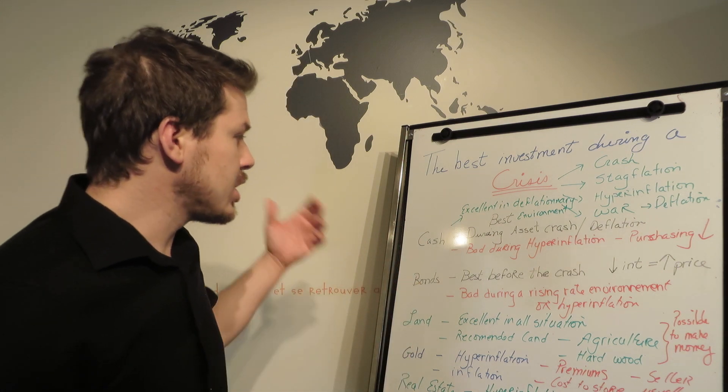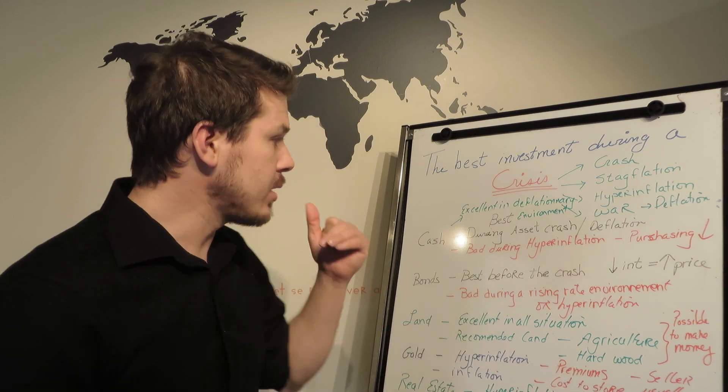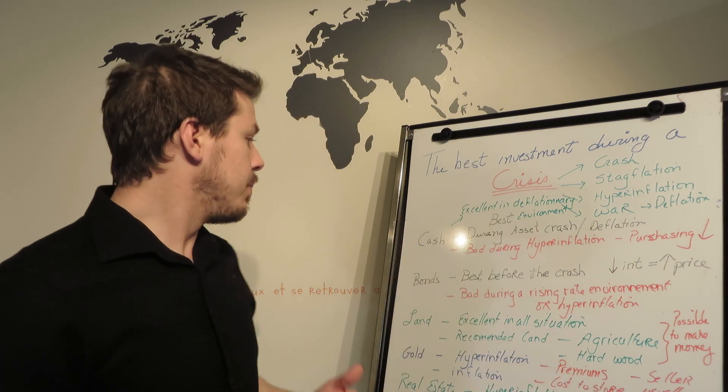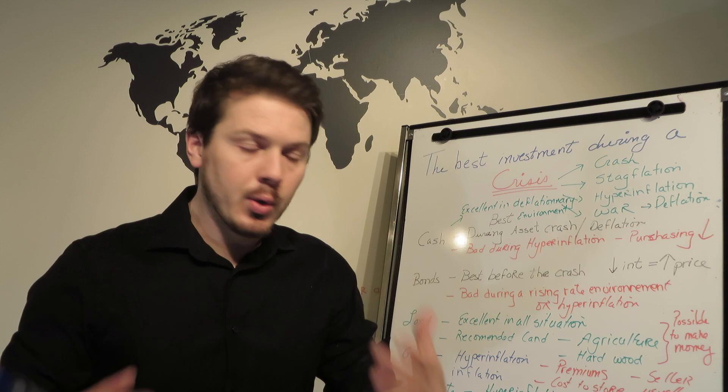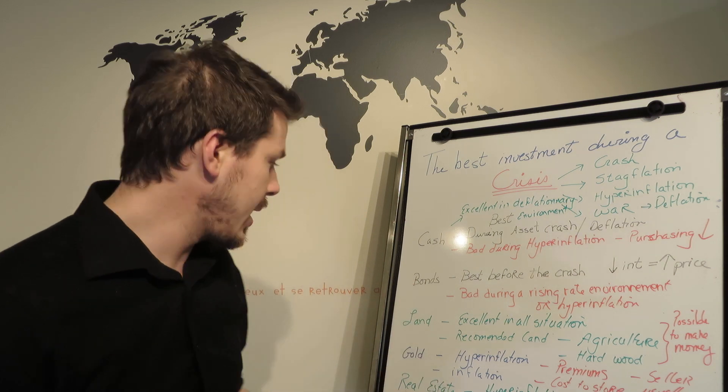Now, let's look at cash. Cash is good during a crash, bad during hyperinflation. Bonds are good just before a crash, but they're bad when interest rates start to rise.